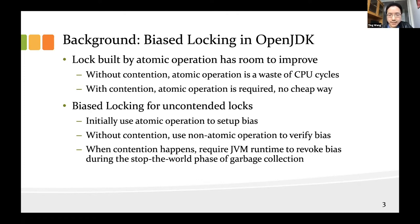The rough idea is that when a first thread tries to acquire a lock, it uses an atomic operation to set up bias towards itself. In following lock operations, if the contention is rare, then the first thread can simply use non-atomic operations to verify the bias. When a second thread jumps in and tries to acquire the same lock, it requires JVM runtime to kick in and revoke the bias. This has to happen during the stop-the-world phase of garbage collection, so it is considerably much more overhead.